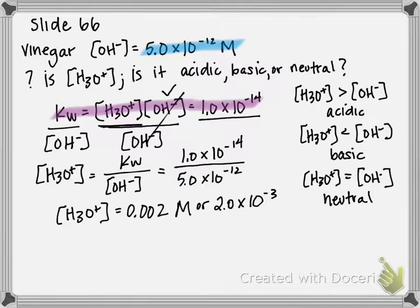The second part of the question asks us: is it acidic, basic, or neutral? If something's acidic, that means we have a higher concentration of H3O+ compared to hydroxide. If something's basic, H3O+ is less than the hydroxide concentration. And if something is neutral, they're both equal.